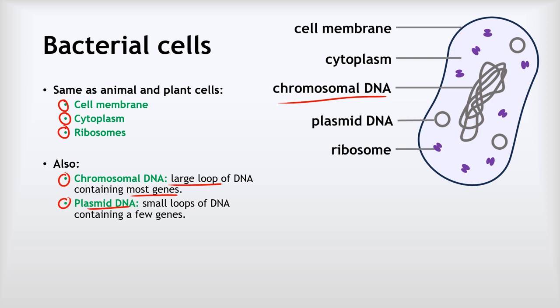We've also got some smaller loops of DNA that we call plasmids. Now the plasmid DNA is again floating freely in the cytoplasm rather than being in the nucleus, and it's made up of these small loops of DNA containing only a few genes.